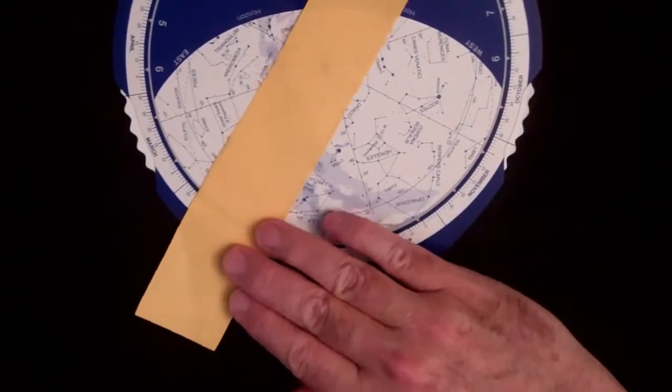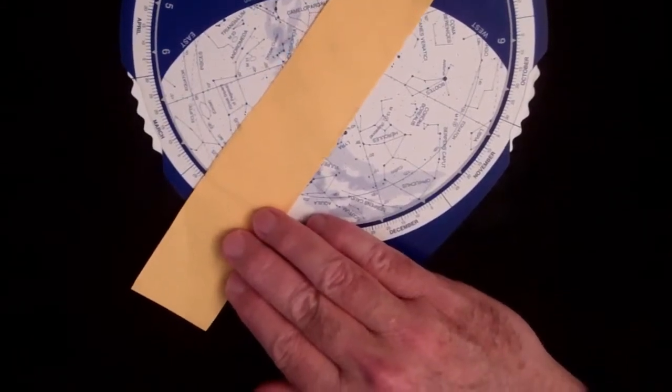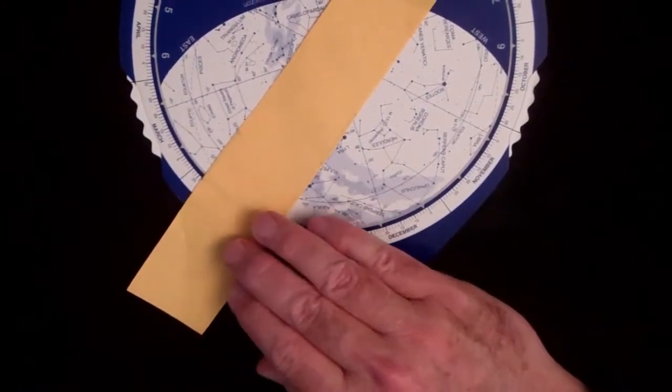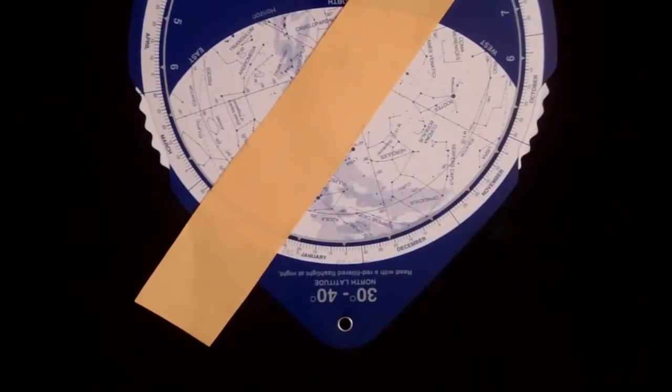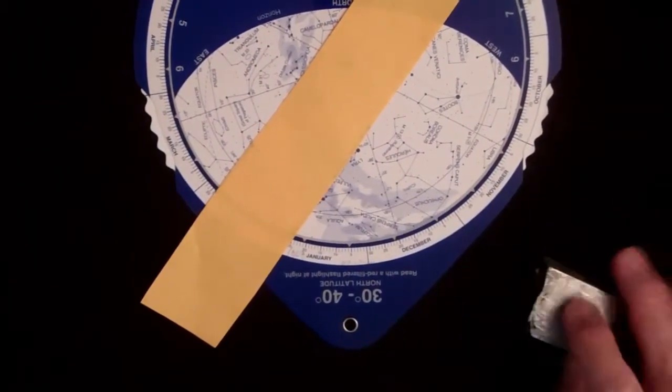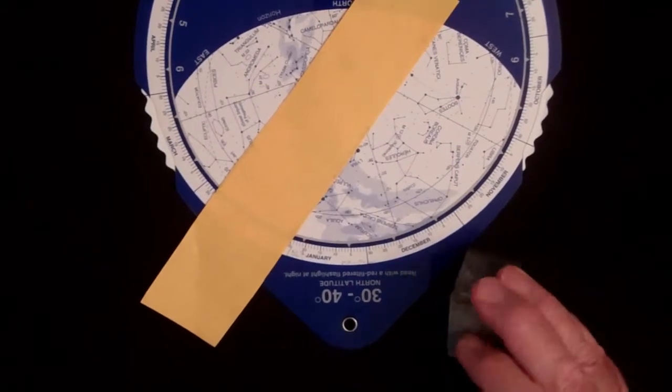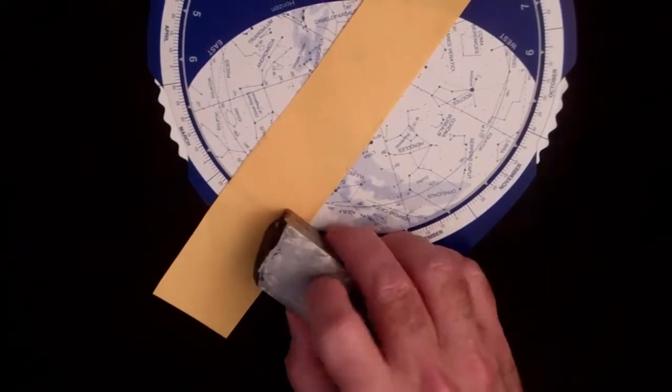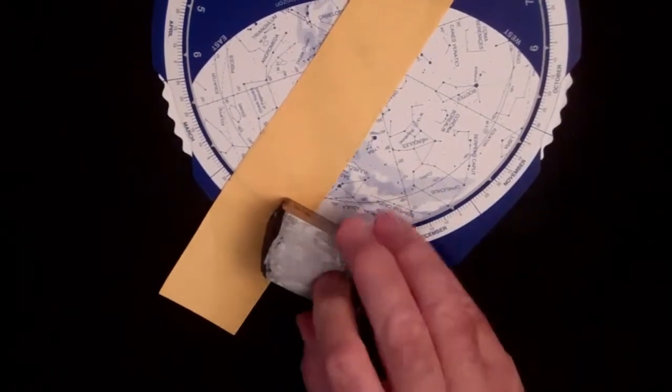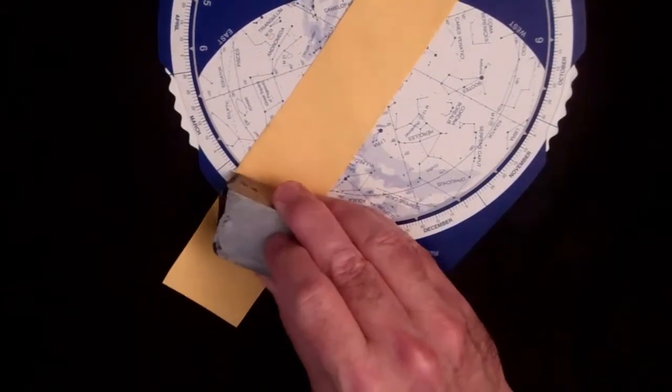Alright, and we line it up with the two stars there. And the paper might move so I think you need something to hold the paper down. Is that one of my meteorites? Okay, just be sure you put it back.